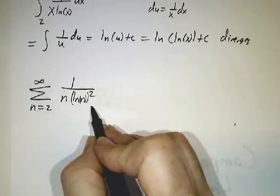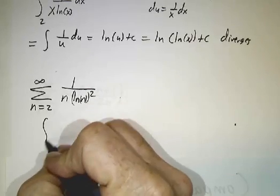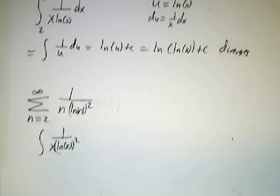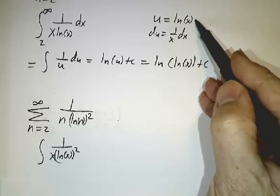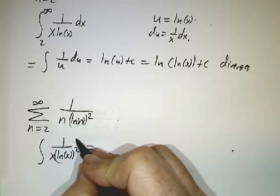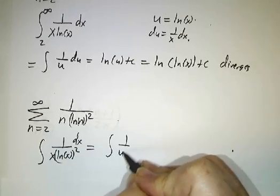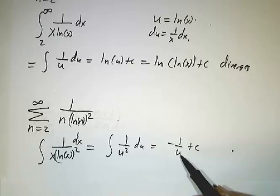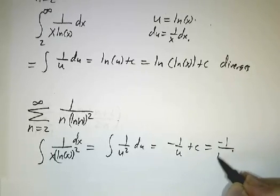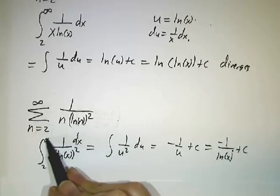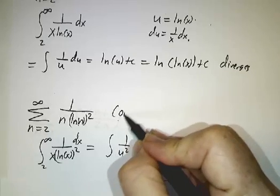Okay. One more. This, you compare it to the integral of 1 over x natural log of x squared. You use the exact same substitution, u equals log x, du equals 1 over x dx. And then you get that this is the integral of 1 over u squared du, which is minus 1 over u plus a constant. That's no problem. As x goes to infinity, minus 1 over log x goes to 0. There's no problem with this improper integral. The integral converges, so the sum converges.